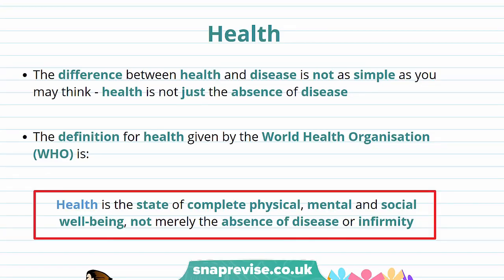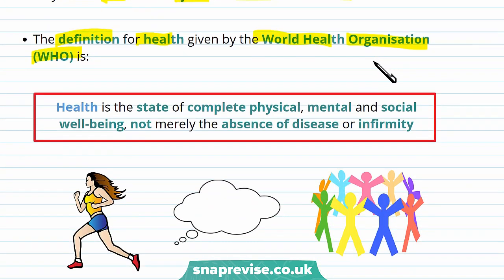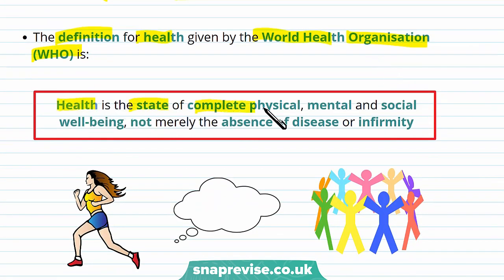Healthy people tend to live longer and lead better quality lives. Health is also tied to disease, and disease can often cause poor health. There's actually a difference between health and disease, and it's not as simple as you may think. Health is not just the absence of disease. The definition for health is given by the World Health Organization, or WHO, and it states that health is a state of complete physical, mental and social well-being, not merely the absence of disease or infirmity.